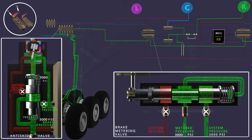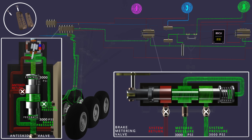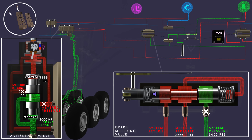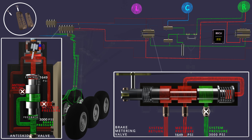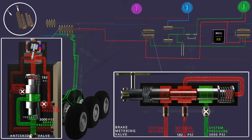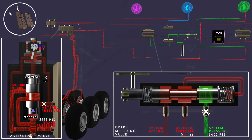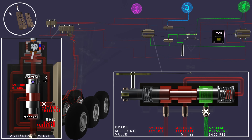When the brake pedal is released, the metering valve operates and connects the system return line to the metered pressure line. As the metered pressure is released, the control pressure drops and operates the anti-skid valves. The higher brake pressure pushes the spool and is connected to the anti-skid return line, and the brake pressure is released through the anti-skid return to the right hydraulic system.